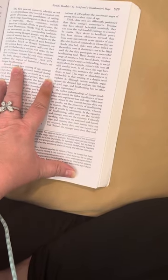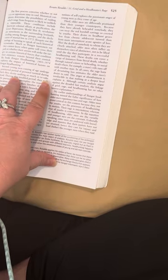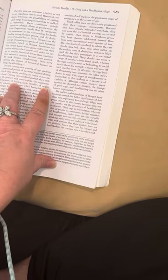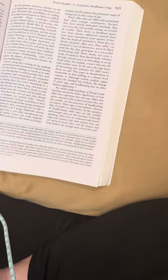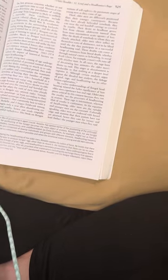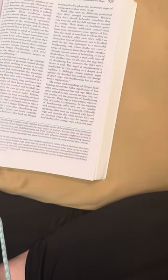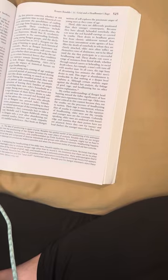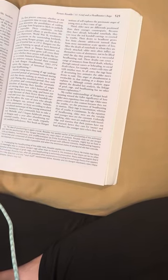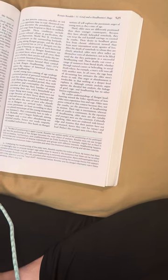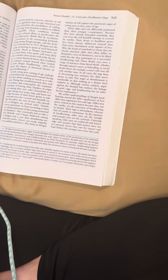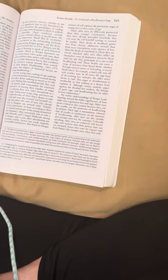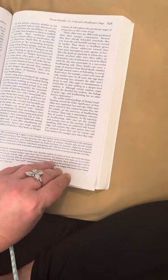Their desire to headhunt grows less from chronic adolescent turmoil than from more intermittent acute agonies of loss. After the death of somebody to whom they are closely attached, older men often inflict on themselves vows of abstinence not to be lifted until the day they participate in a successful headhunting raid. These deaths can cover a range of instances from literal death, whether through natural causes or beheading, to social death where, for example, a man's wife runs off with another man. In all cases, the rage born of devastating loss animates the older men's desire to raid. This anger at abandonment is irreducible in that nothing at a deeper level explains it. Although certain analysts argue against the dreaded last analyst, the linkage of grief, rage, and headhunting has no other known explanation.